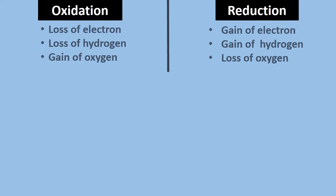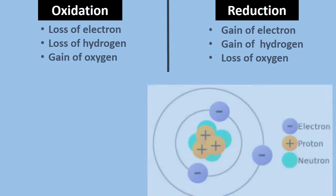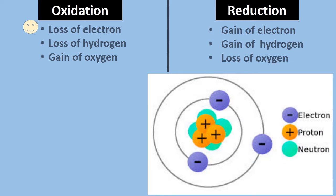To better understand oxidation reduction reactions, we look at the major definitions. In oxidation, there is loss of electrons. Reduction involves gain of electrons and gain of hydrogen — while oxidation involves loss of hydrogen. The third point: oxidation involves gain of oxygen — the word comes from 'oxy' — so gain of oxygen means oxidation, and reduction is the reverse, meaning loss of oxygen.